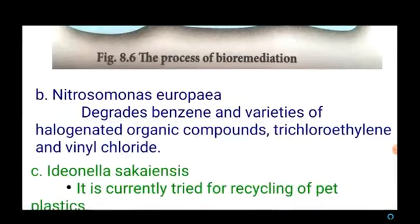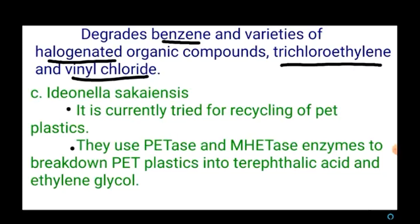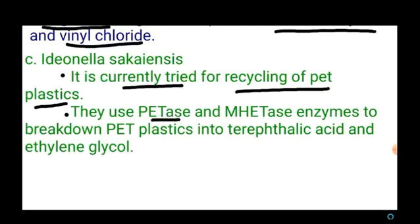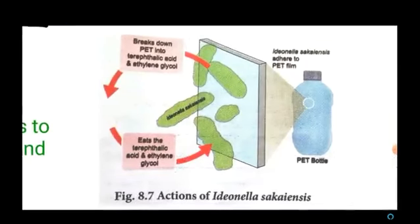Nitrosomonas europaea degrades benzene and a variety of halogenated organic compounds like trichloroethylene and vinyl chloride. Ideonella sakaiensis is currently on trial for recycling PET plastics. It uses PETase and MHETase enzymes to break PET plastic into terephthalic acid and ethylene glycol, thus breaking down PET bottles into smaller molecules.